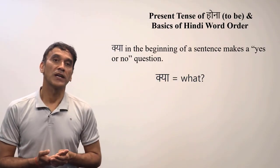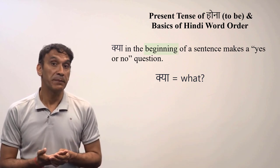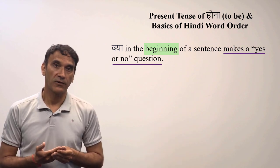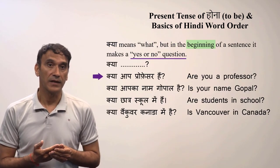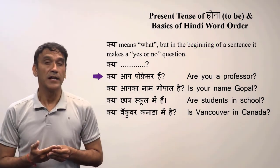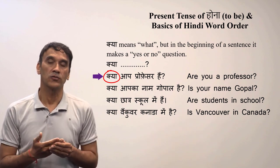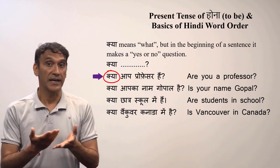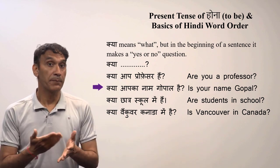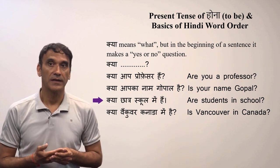One more important point: the word KIA means 'what,' but when it comes at the beginning of a sentence it forms a yes/no question. For example, AAP professor HAIN means 'you are a professor,' but KIA AAP professor HAIN means 'are you a professor?' More examples: KIA aapka naam Gopal HAI — is your name Gopal? KIA chhatra school mein HAIN — are the students in school? KIA Vancouver Canada mein HAI — is Vancouver in Canada?